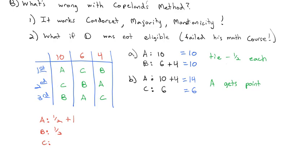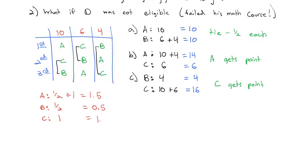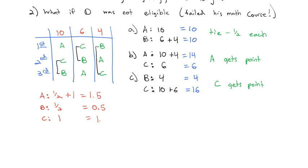There's no D to compare to, so now we'll bump down to B. And B only needs to be compared to C. So let's see. C beats B for 10 points, or 10 votes. C beats B for 6 votes. And B beats C for 4 votes. And so what we see is B gets 4 votes, C gets 16 votes. And so it appears C gets the point. Which means when we total them up, A has 1.5, B has 0.5, and C only gets 1. Which means now that we've removed D and D was not eligible, A wins the scholarship.